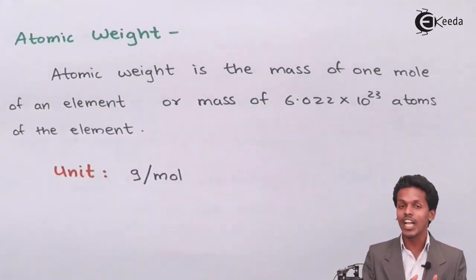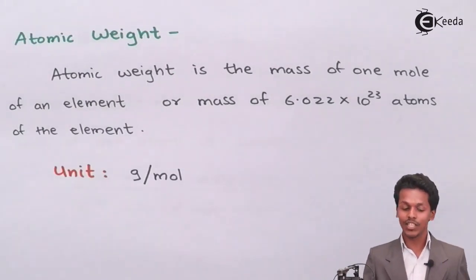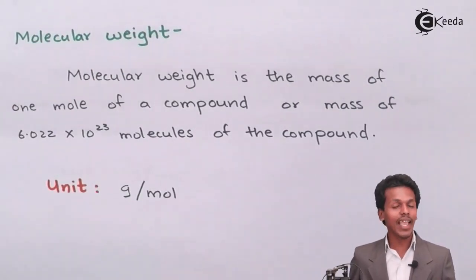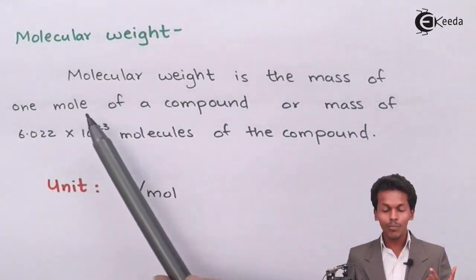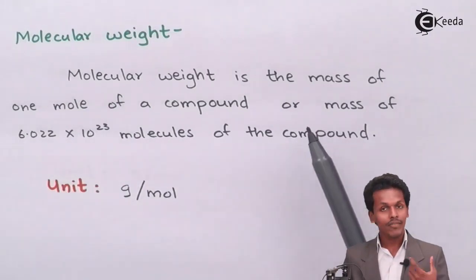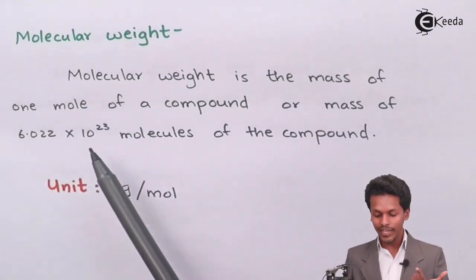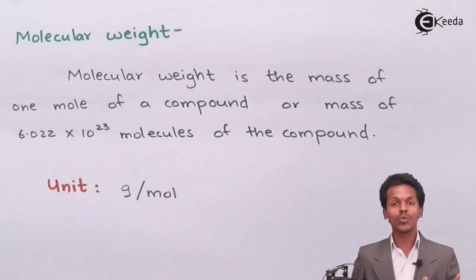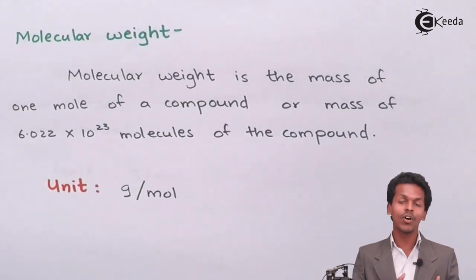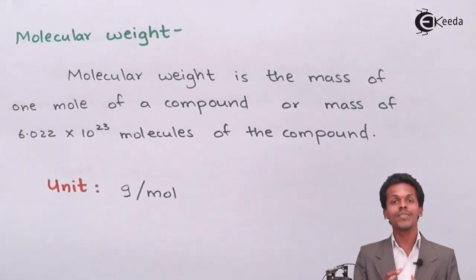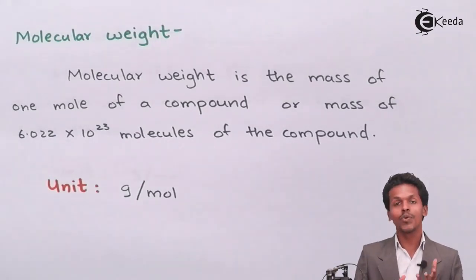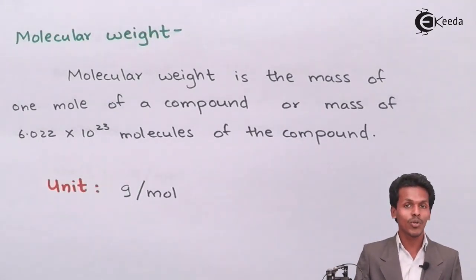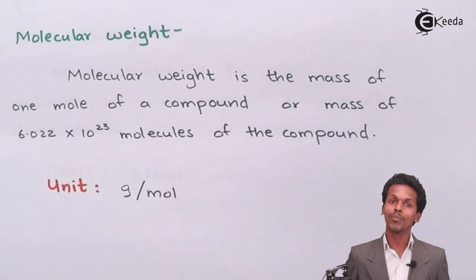Now talking about molecular weight: molecular weight is the mass of one mole of a compound, or the mass of 6.022 × 10²³ molecules of the compound. Since a molecule is the smallest particle of a compound, we can estimate the weight of 6.022 × 10²³ particles of that compound, and hence the unit is gram per mole.